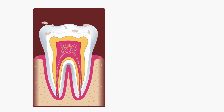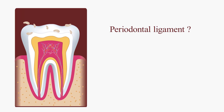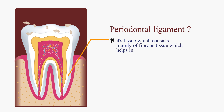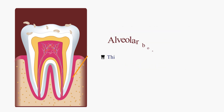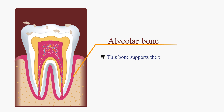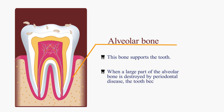The periodontal ligament is tissue consisting mainly of fibrous tissue which helps in connecting the tooth root and the alveolar bone. It helps in reducing the force of the tooth directly on the alveolar bone while chewing. The alveolar bone supports the tooth, and when a large part of it is destroyed by periodontal disease, the tooth becomes loose.